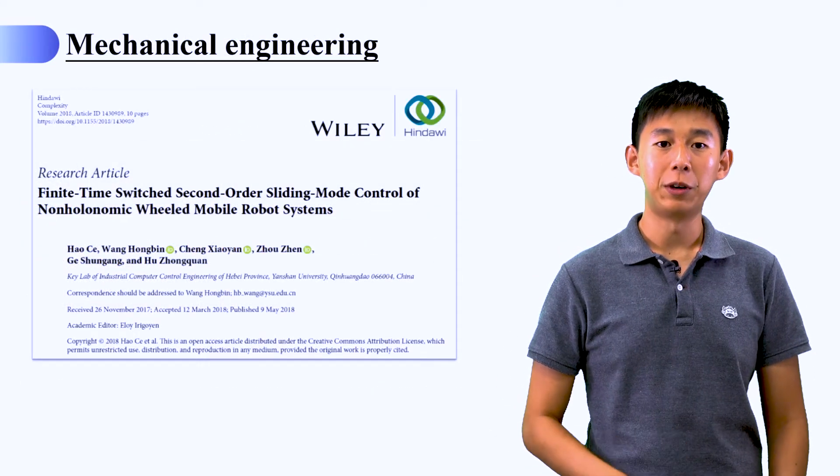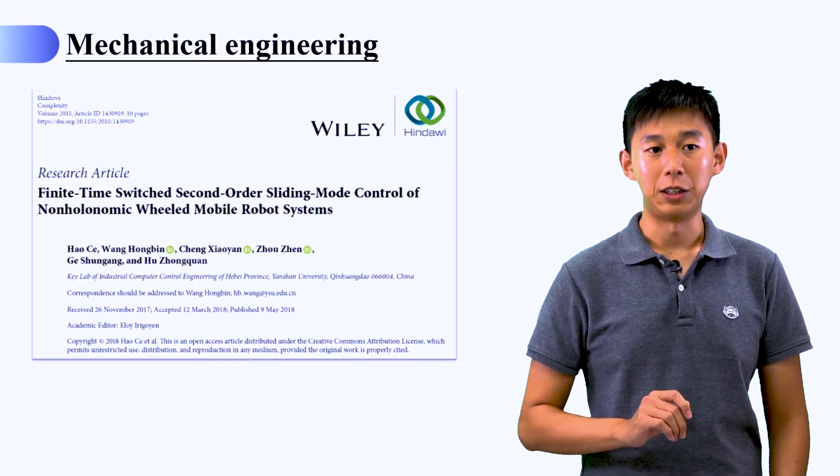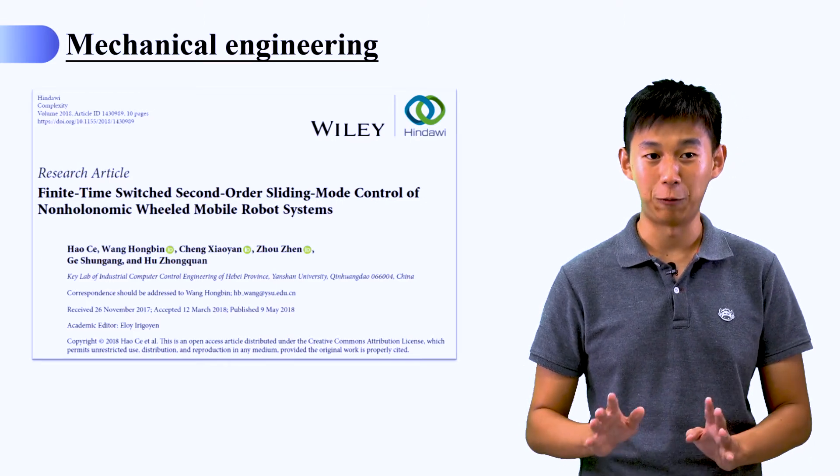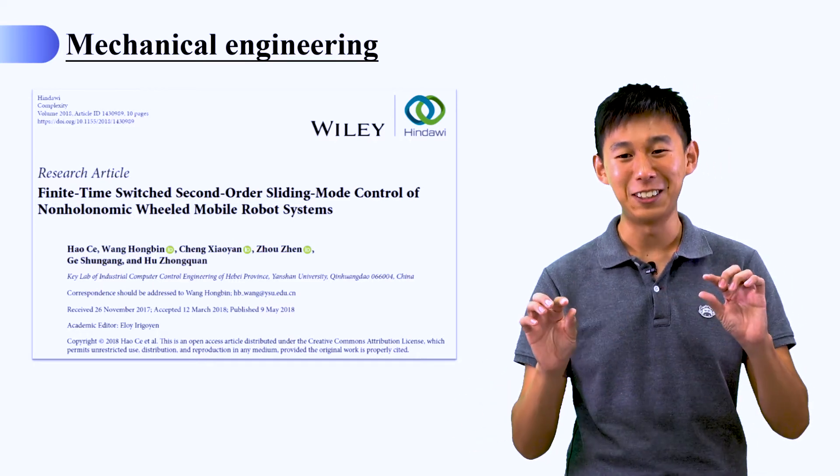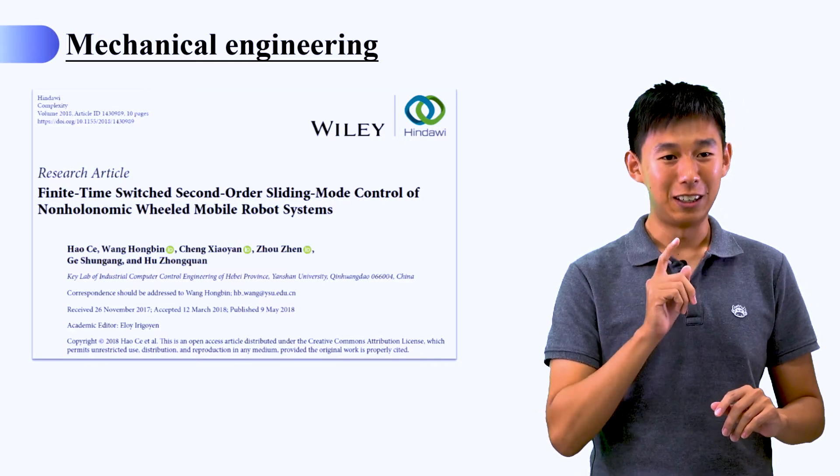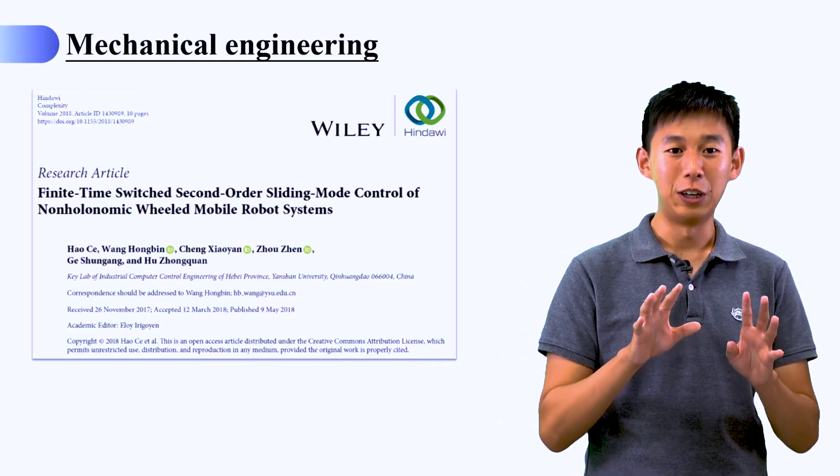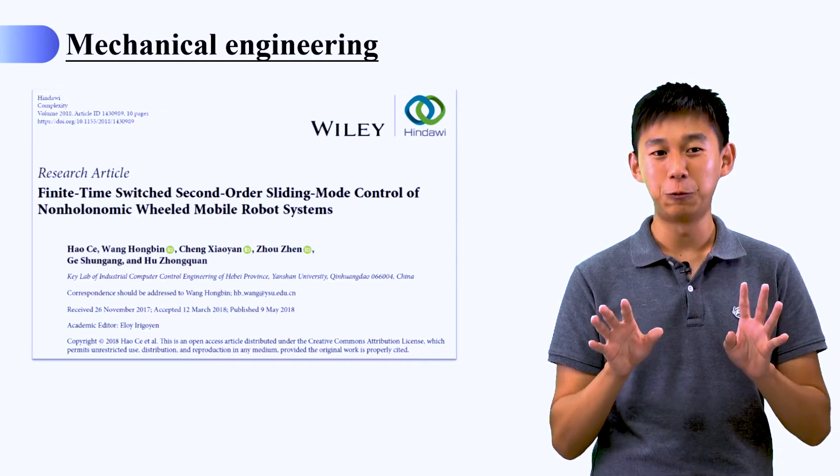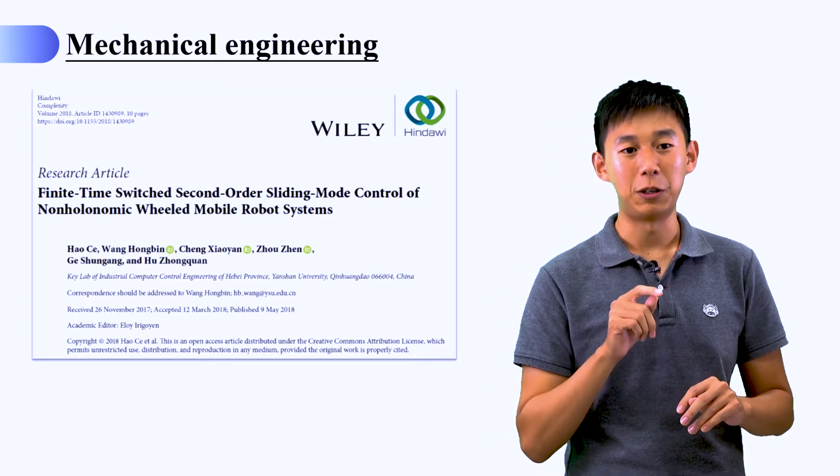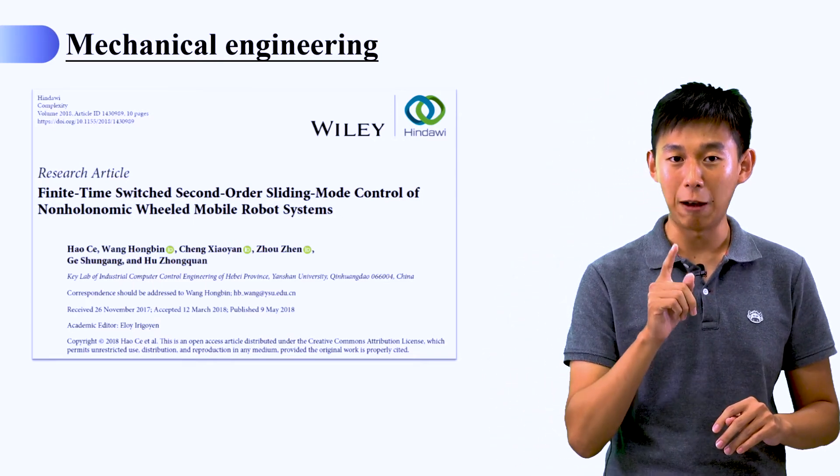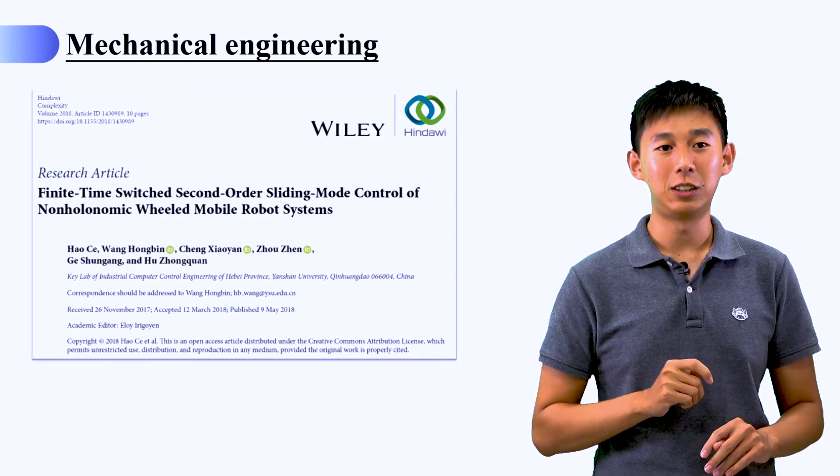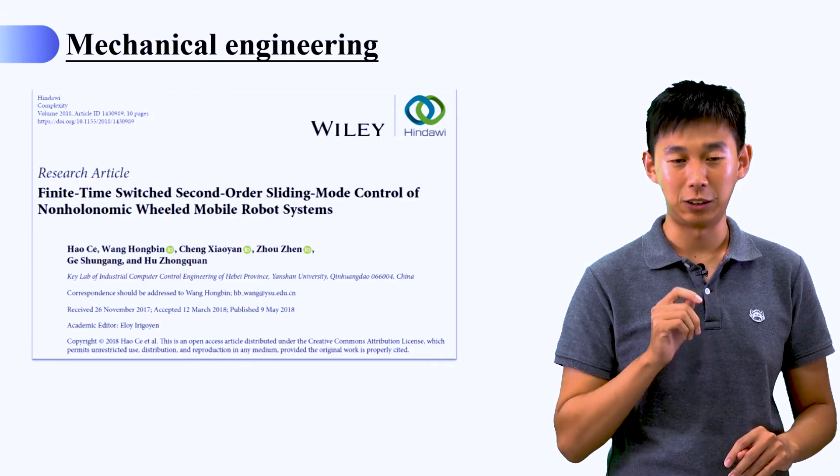This is a research article from mechanical engineering. The topic is finite time switched second-order sliding mode control of non-holonomic wheel mobile robot system. So the title is quite long and complex, but you don't think like that. This article is quite interesting because they use a very useful control technique. And if you see the publish date, yeah, it just published in 2018, so maybe you can update your technology of control by this one. And as well, this article is also an open access journal.